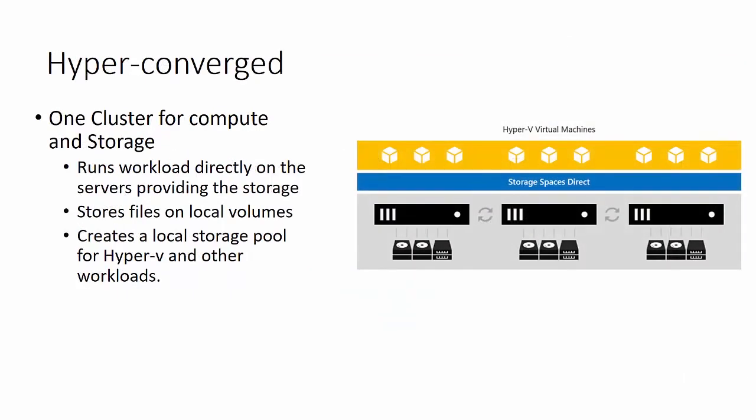There's also a hyper-converged option, where there is one cluster for both compute and storage. It runs the workload directly on the servers that are also providing the storage. Files are stored on local volumes as opposed to volumes over the network, and it creates a local storage pool for Hyper-V and other workloads.